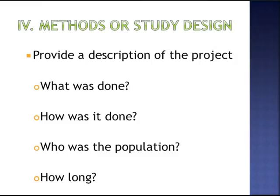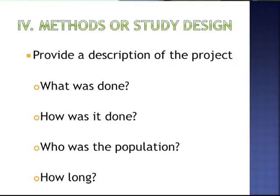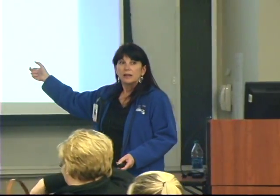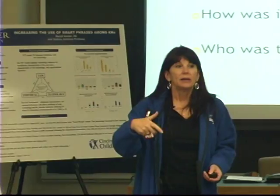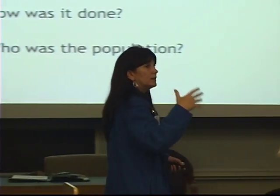In your methods or study design section, provide a description of the project — what was done, how was it done, and who was the population? For example, using the hourly rounding study: did hourly patient rounding compared to bed alarms alone decrease falls in patients aged 65 and older? Describe how you did the rounding, how you trained staff, what the hourly rounding included, and any other factors related to that intervention.